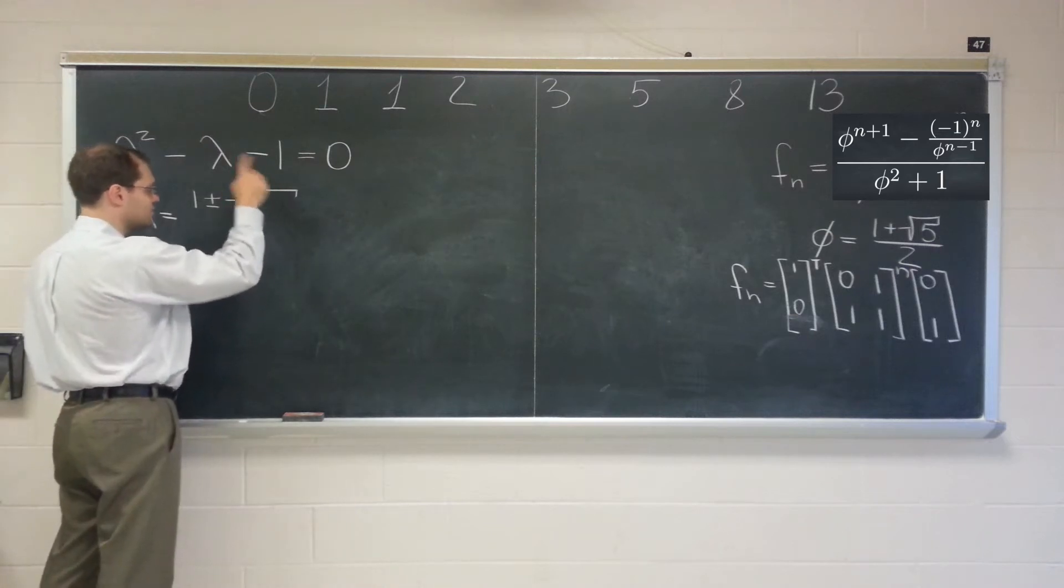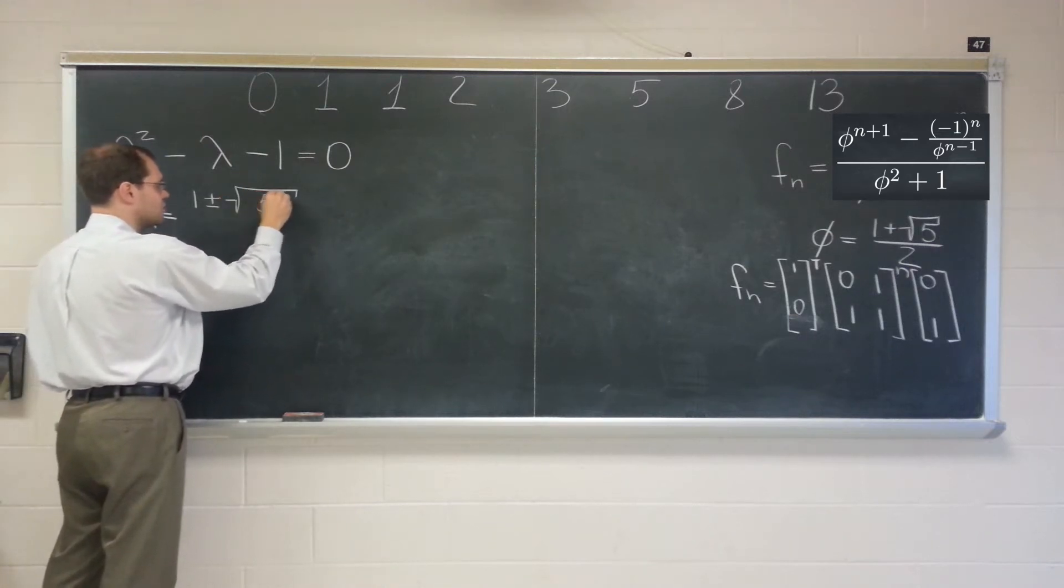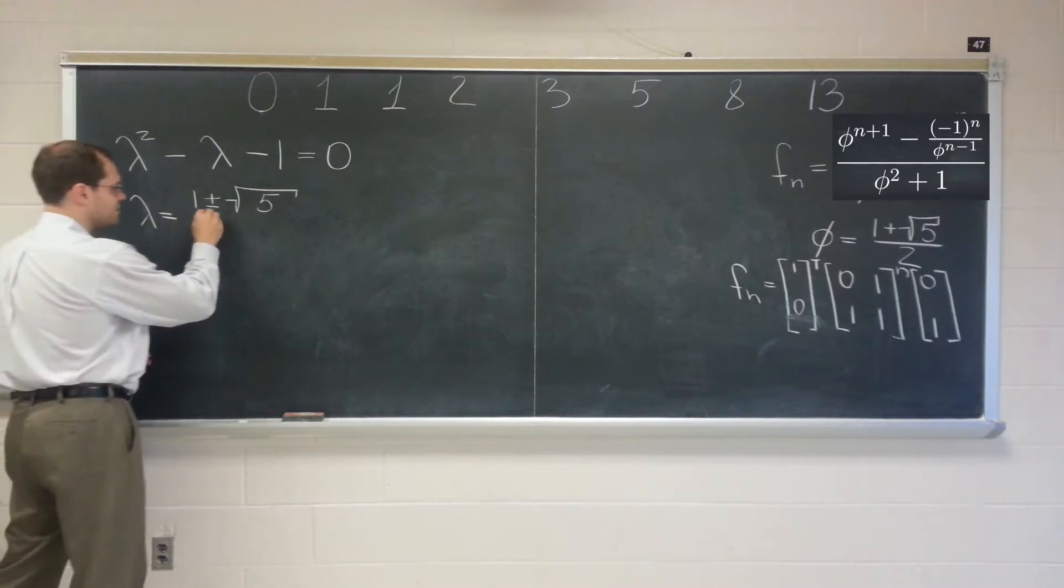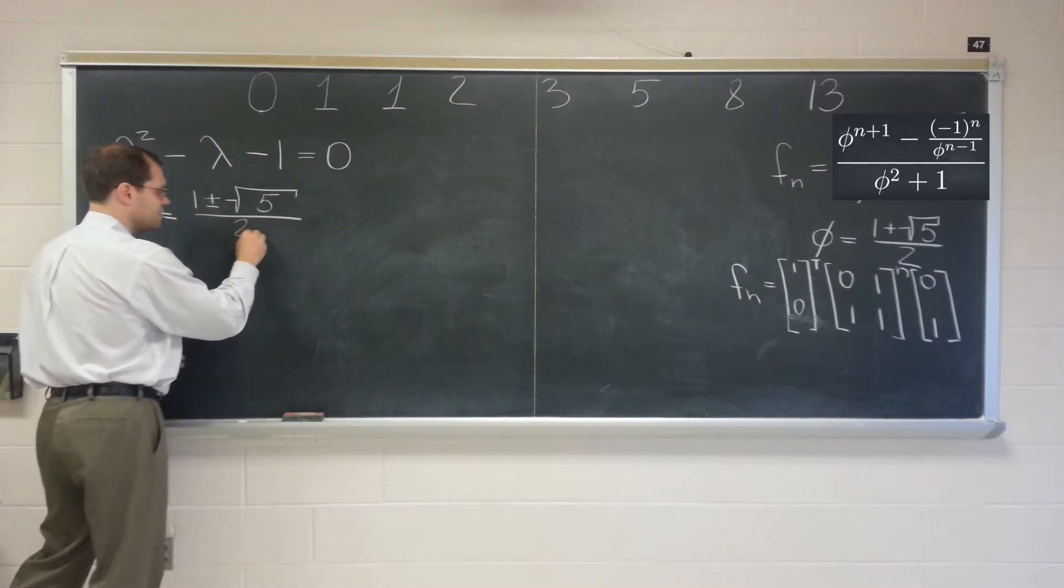And the two roots are minus b, 1, plus or minus square root of b squared, which is 1, minus 4ac, which is 4, minus 4, so plus 4. So 1, plus or minus square root of 5, divided by 2a, which is 2.